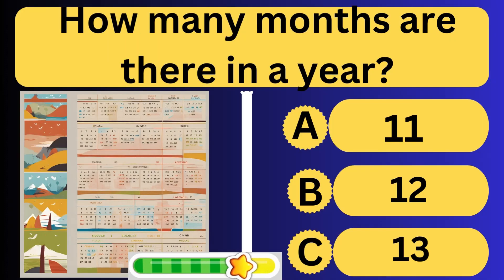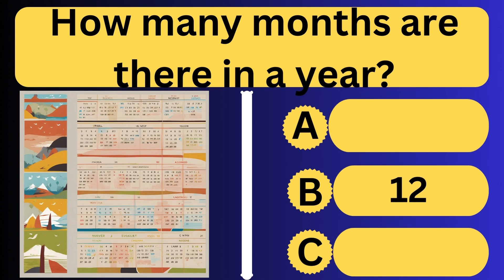How many months are there in a year? There are 12 months in a year.